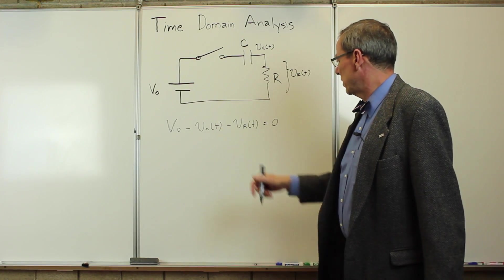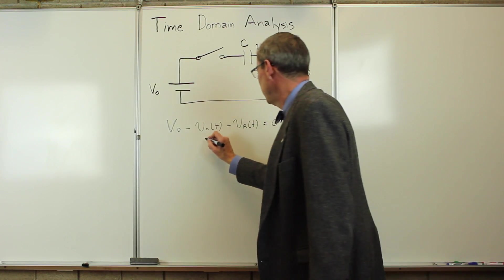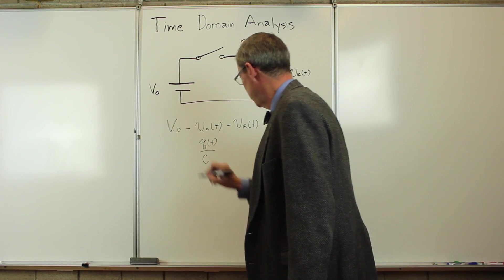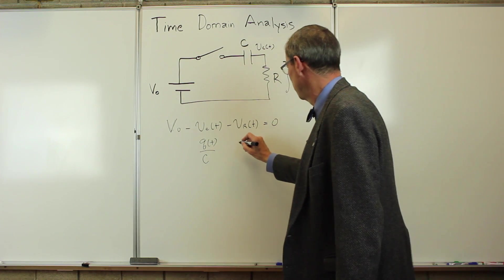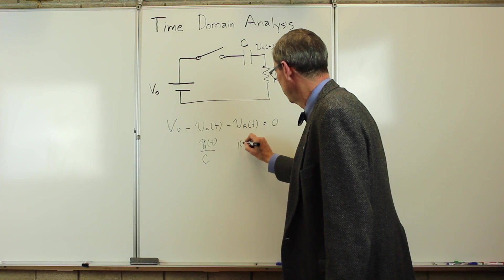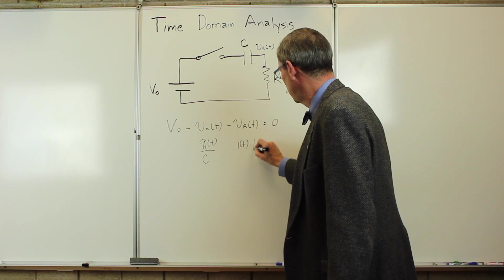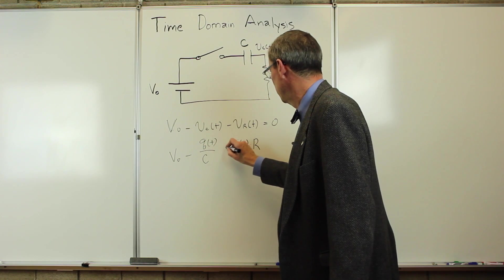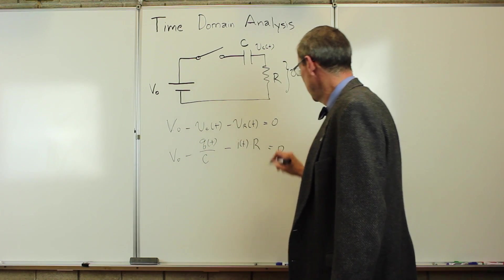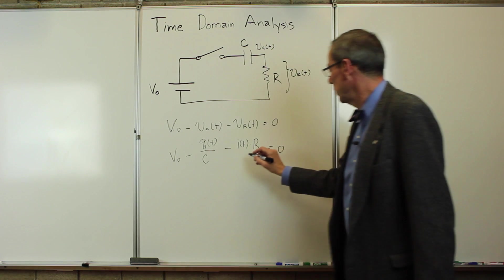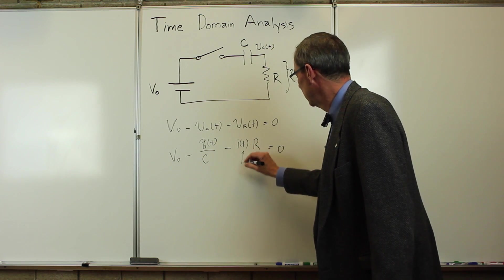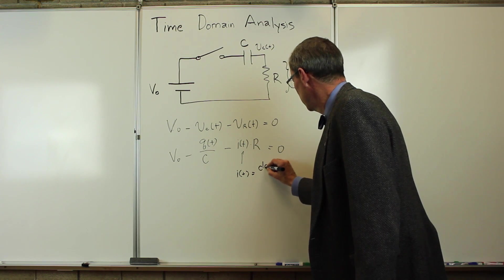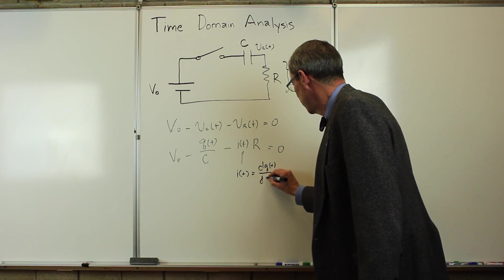Remember, the voltage across the capacitor is simply the charge on the capacitor divided by the capacitance. And the voltage across the resistor is the current through the resistor times the resistance. But we also know that the current, I of t, is the time derivative of the charge as a function of time.